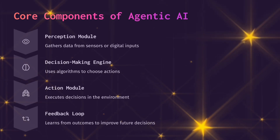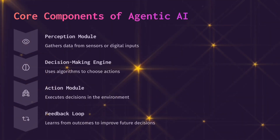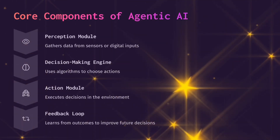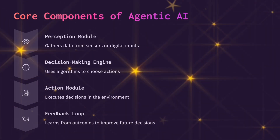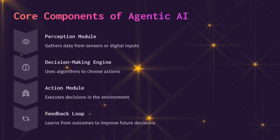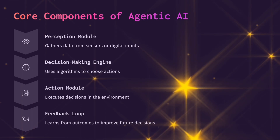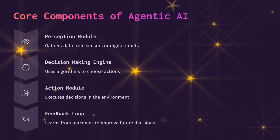Core Components of Agentic AI: The Perception Module gathers data from sensors or digital inputs. The Decision-Making Engine uses algorithms to choose actions. The Action Module executes decisions in the environment. The Feedback Loop learns from outcomes to improve future decisions.